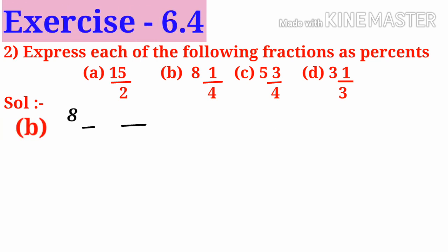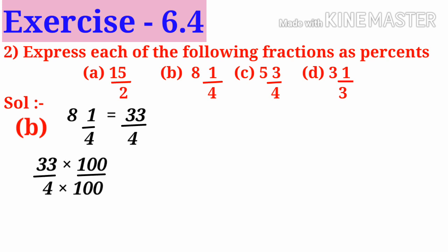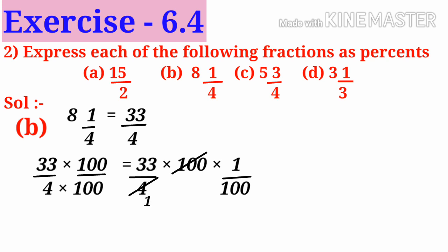B: 8 and 1 by 4. First convert it into an improper fraction: 8 times 4 is 32 plus 1, giving 33 by 4. Now multiply both numerator and denominator by 100, that is 33 by 4 into 100 into 1 by 100. On simplification by 4, we get 33 into 25, which is 825. Since 1 by 100 is denoted by percent, the answer is 825 percent.